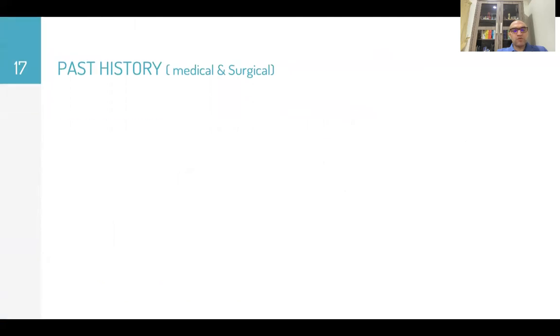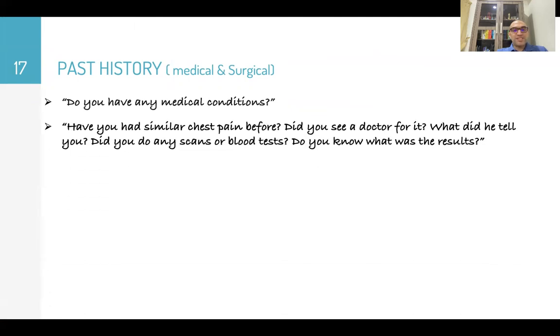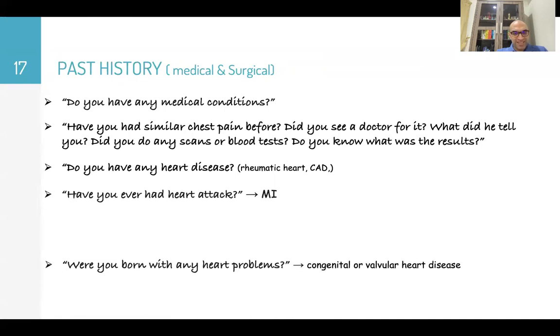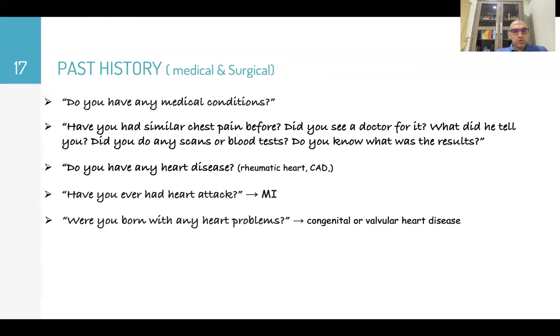Then after present history, we'll go for the past history, past medical and surgical history. Do you have any medical conditions? Have you had similar chest pain before? Did you see a doctor for it? What did he tell you? Did you do any scans or blood tests? Did you know what was the result of this test? Do you have any heart disease? Have you ever had heart attack, myocardial infarction? Were you born with any heart problems, like congenital heart problems or valvular heart disease? Have you ever been diagnosed with high blood pressure, high blood glucose or high cholesterol, which are risk factors for myocardial ischemia?